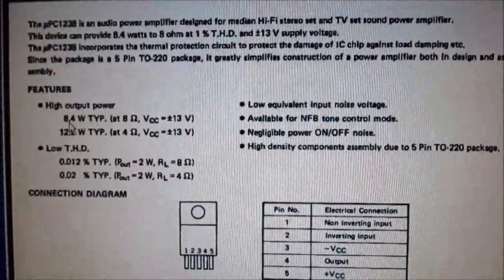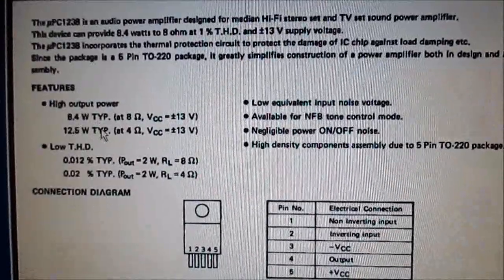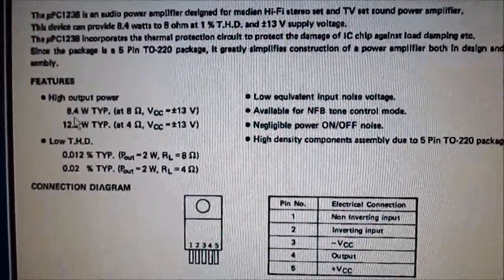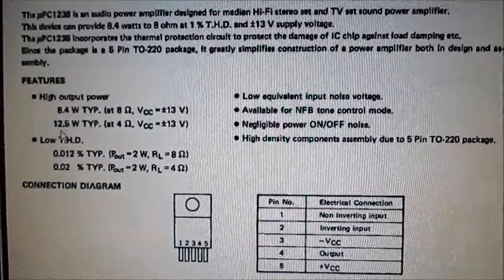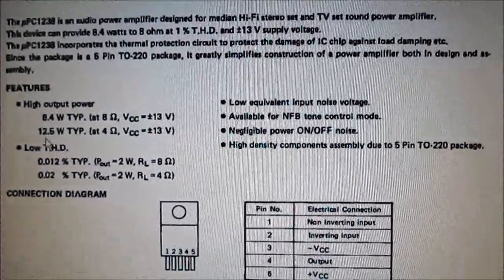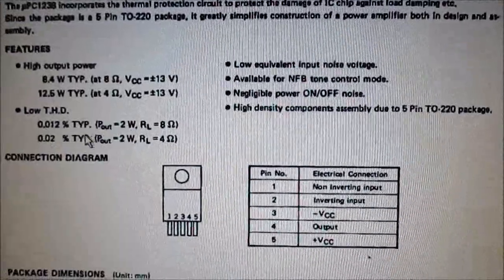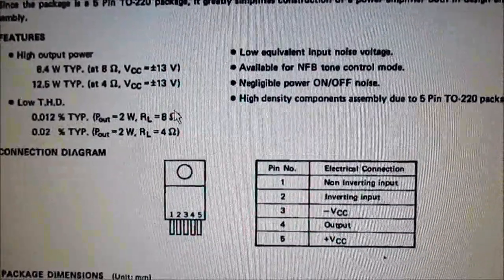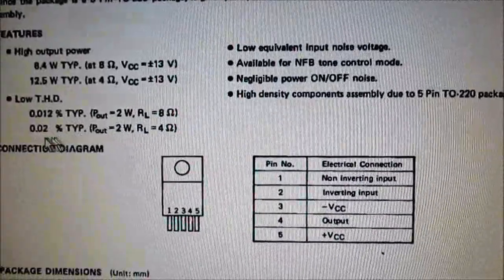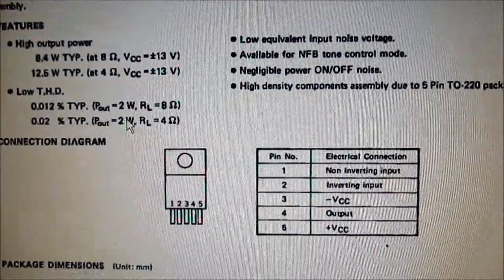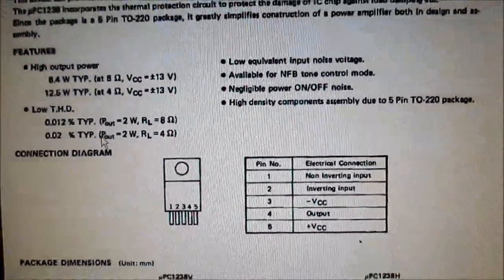These are output numbers at 1% distortion: 8.4 watts at 8 ohms, 12.6 watts at 4 ohms. These, of course, are 1 kHz probably. At 2 watts, 8 ohm and 4 ohm, pretty low distortion.